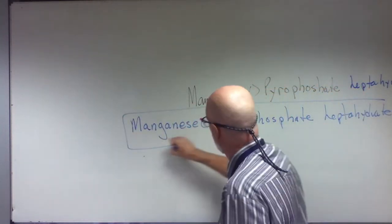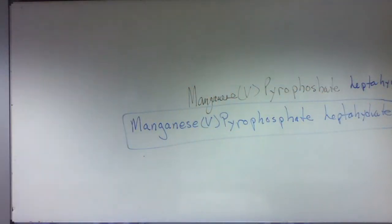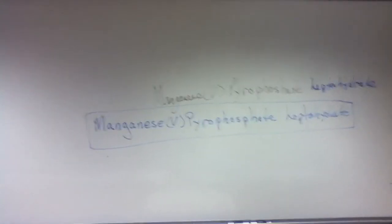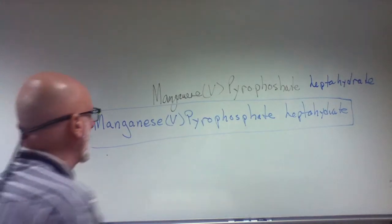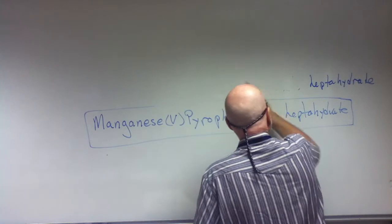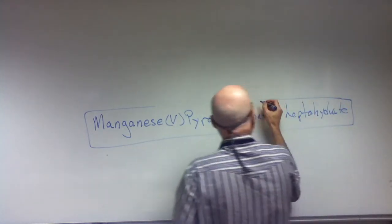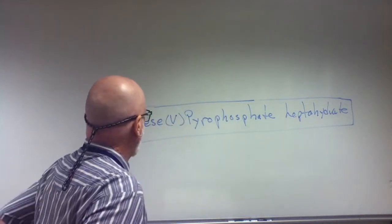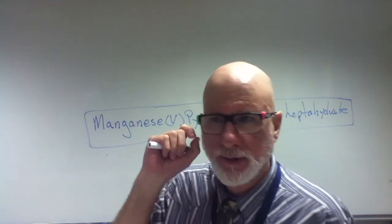Manganese-4-pyro-phosphate. Heptahydrate. Is that completely on the screen? Not really. All right, almost. Okay. Shall we write that again, and we'll write that on the screen, make it look good? We're going to say, manganese-5-pyro-phosphate. Heptahydrate.